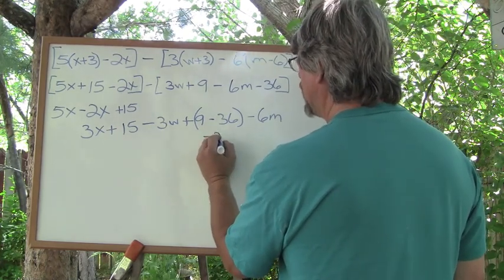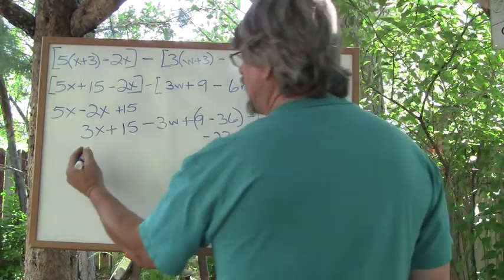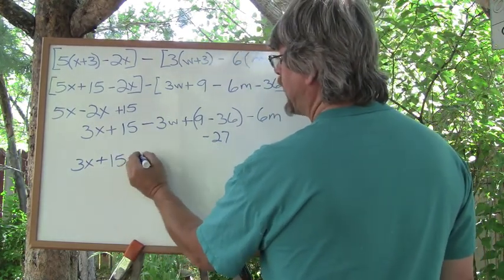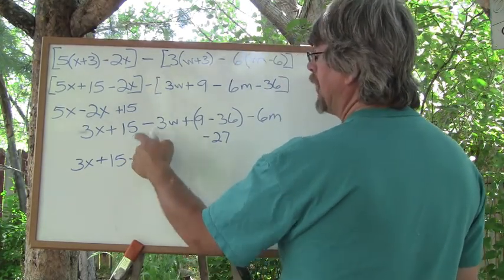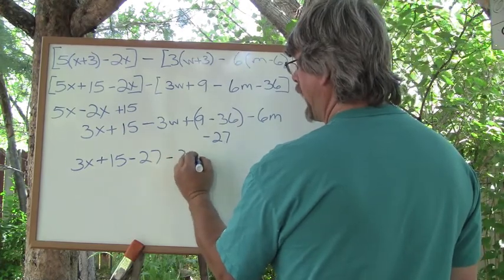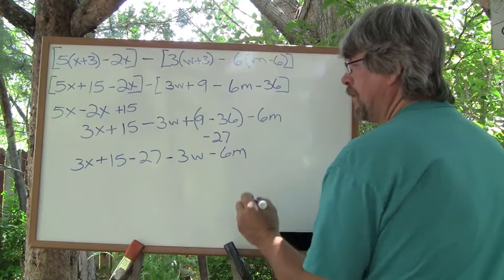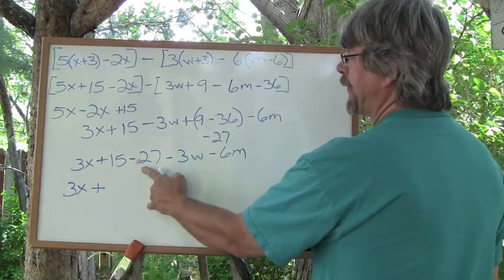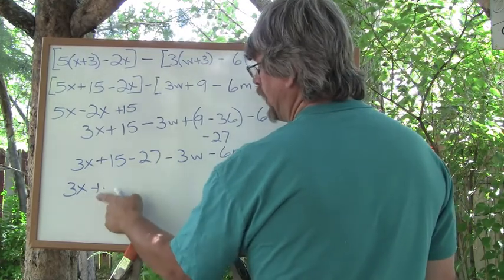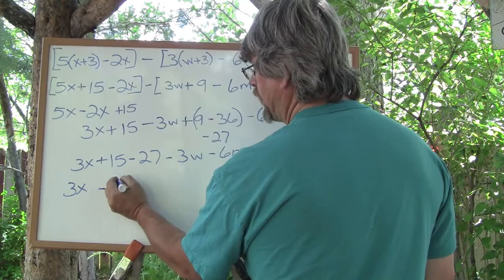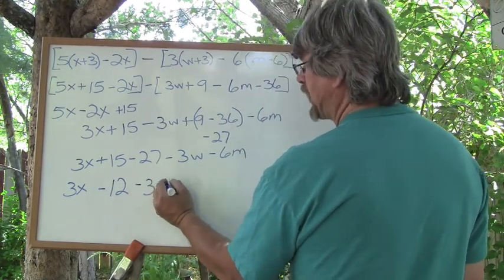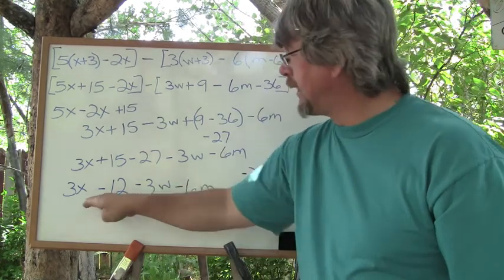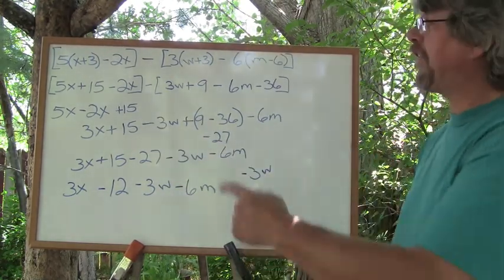So we have 3x plus 15 minus 27. We're going to put the like terms together. Minus 3w minus 6m. Now we do the subtraction here: 3x plus 15 minus 27 is negative 12, so instead of saying plus we'll go minus 12, minus 3w, we just copy that along, minus 6m. Well, I'll just leave it that way. You can't combine any more like terms, so you're fine. So this is the idea in grouping symbols.